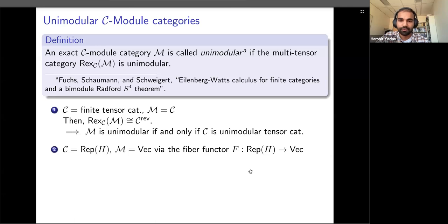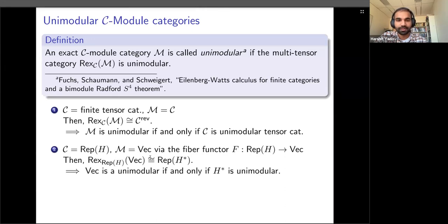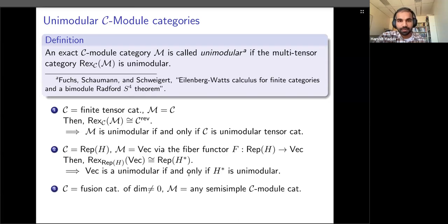If we take C to be representations of a Hopf algebra H, there is a forgetful functor from Rep(H) to vector spaces which is monoidal. We can turn the target category into a module over the first one: if we take M to be Vec, the endofunctor category is just the representation category of H* (the dual Hopf algebra). So this covers both extremes: if M is the same as C, unimodularity equals unimodularity of H; if M is Vec, this corresponds to unimodularity of H*.